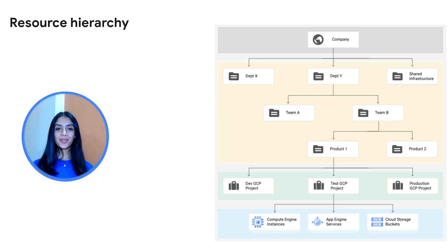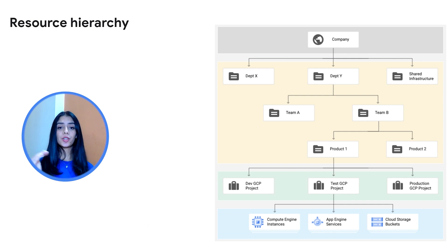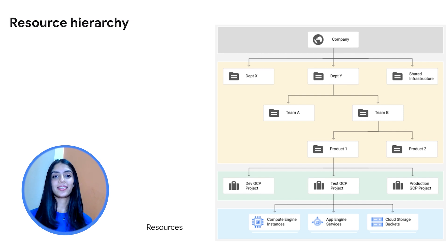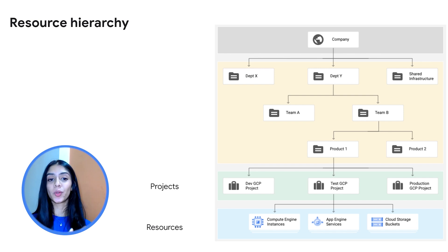Now that we've begun our journey by creating an account, let's go over understanding what a resource hierarchy on Google Cloud is. A resource hierarchy helps us understand how your resources are going to be organized, which is extremely crucial when your organization is scaling out and is a great foundation to understanding inheritance of access control and organization policies for your resources. At the bottom of the hierarchy, we have all our resources, which are essentially all the products and services like your Compute Engine instances, machine learning APIs, databases, and everything else.